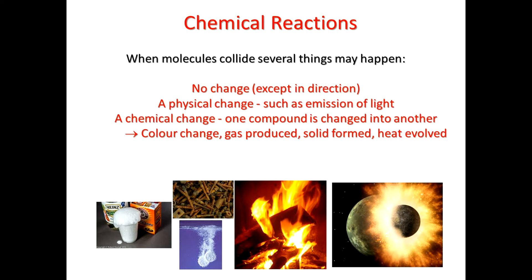If two atoms do want to bind together, there could be a physical change — for instance, an emission of light, which is sort of photophysics. A good example is luminol, which is a chemiluminescent reaction where a reaction happens and the new material emits light. It could also be a chemical change where one compound is actually changing to another, which can give you a colour change, perhaps a gas is produced, a new solid is formed, or maybe it's an exothermic reaction that gives off a lot of heat.